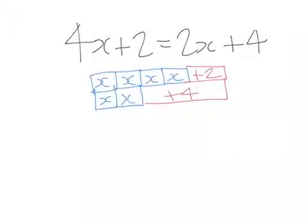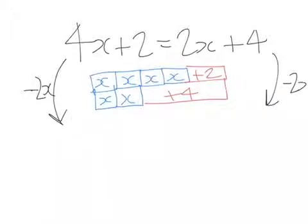Now, my first step is going to be to collect my x terms. So what I do is I would subtract 2x from both sides of my equation. And I ask you, why did I choose to do 2x from 4x rather than 4x from the 2x? Have a think.